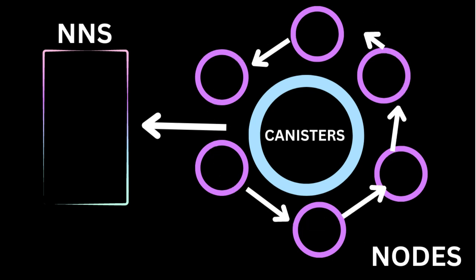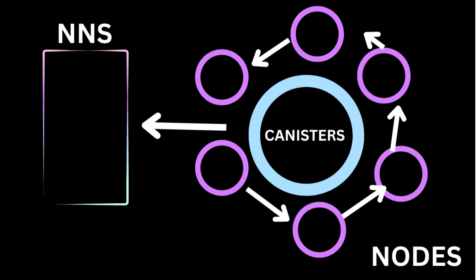Once this information goes into the system, it runs through these nodes that run around the canister, basically verifying all the information to ensure that it's true and that the transactions are what they say they are. The nodes are essentially validators that talk to each other. They verify and validate that whatever's coming through the transaction lines up, making it a fault-proof system. Once verified 100%, the information runs back through the NNS governance system, which confirms it's good to go and sends it out.